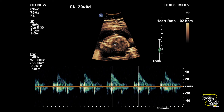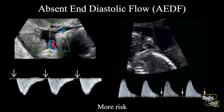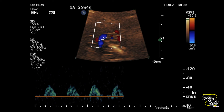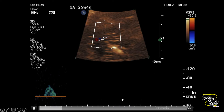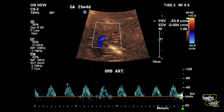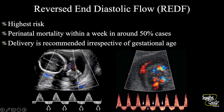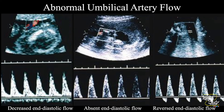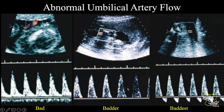As resistance increases, you will eventually see absent end diastolic flow — with only the peak of systole visible — which is a bad sign. Sometimes you will see reversed end diastolic flow, which is also very bad. The abnormalities in order of severity are: decreased end diastolic flow, absent end diastolic flow, and reversed end diastolic flow. Decreased is bad, absent is worse, and reversed is the worst.